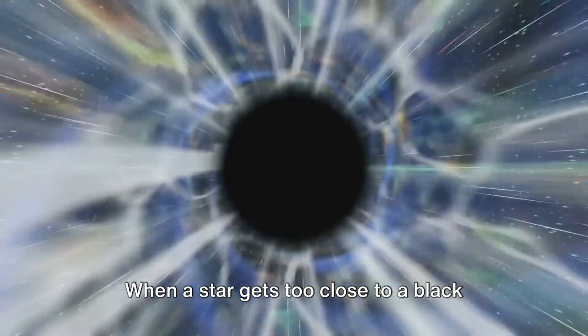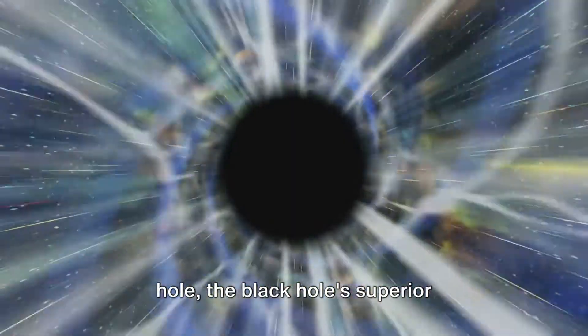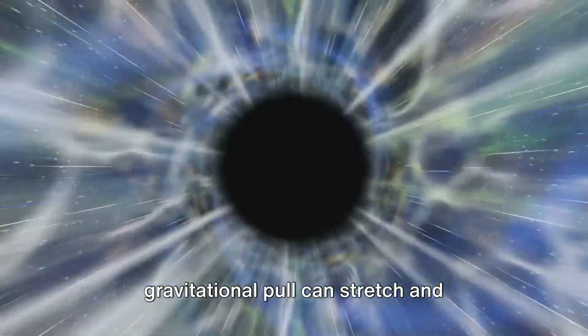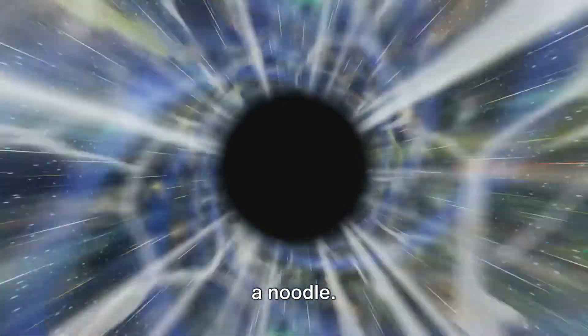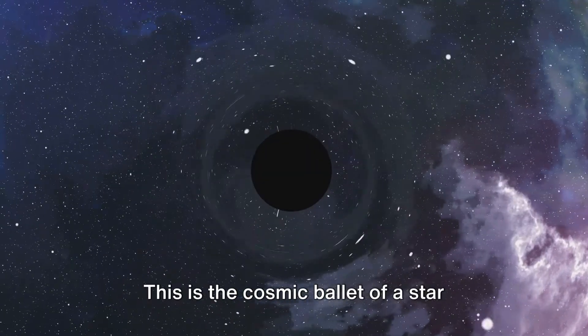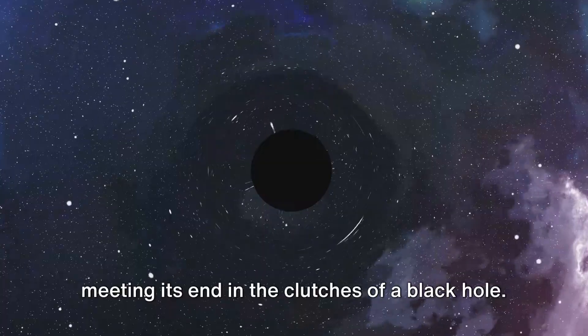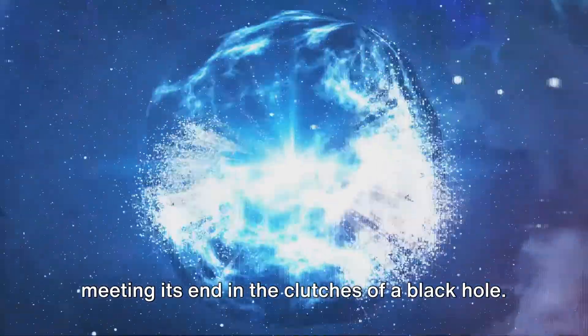When a star gets too close to a black hole, the black hole's superior gravitational pull can stretch and compress the star into a thin strand, like a noodle. This is the cosmic ballet of a star meeting its end in the clutches of a black hole.